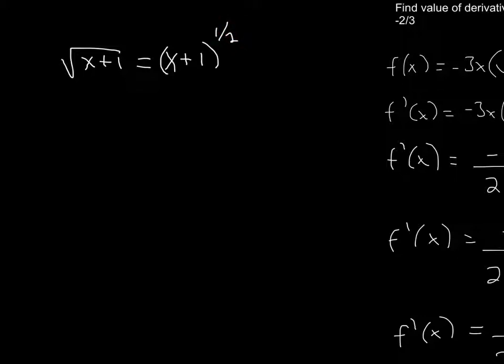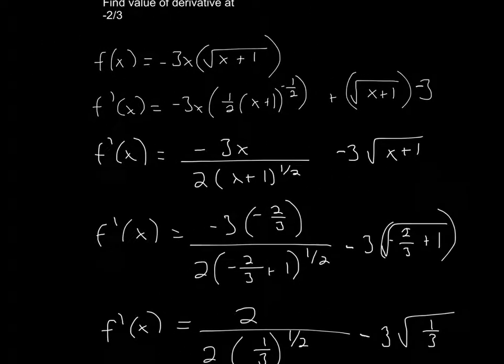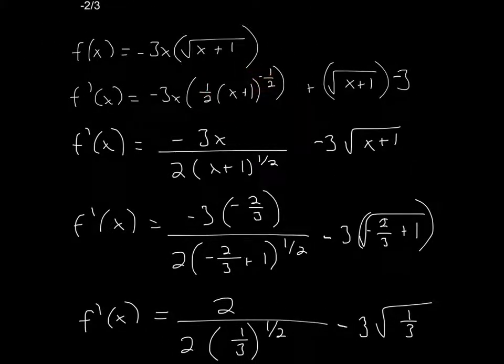So all I'm doing is the power rule of bringing 1 half down, and then subtracting 1 from this, which will give me negative 1 half. So that's what I got here, and then it's going to be plus the second term times the derivative of the first term, so it's negative 3.